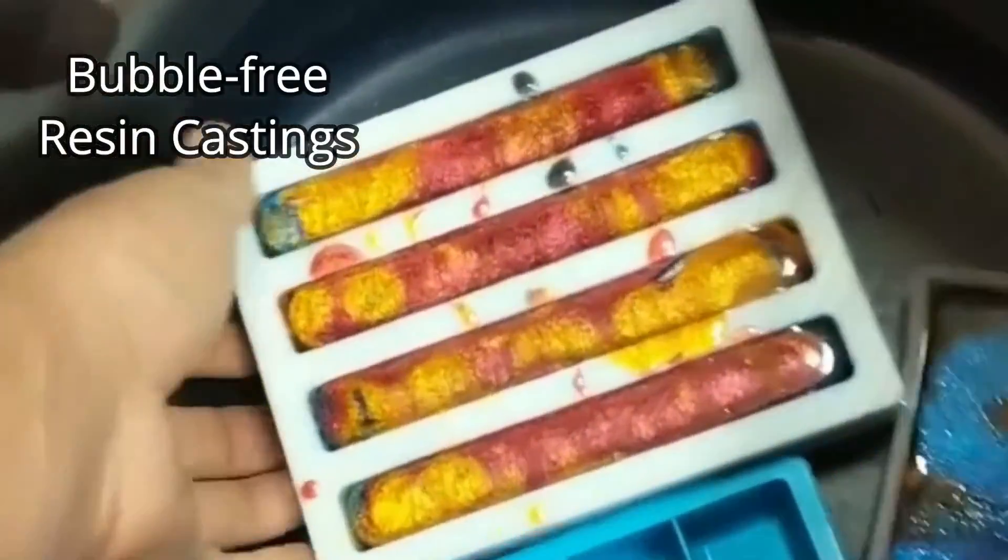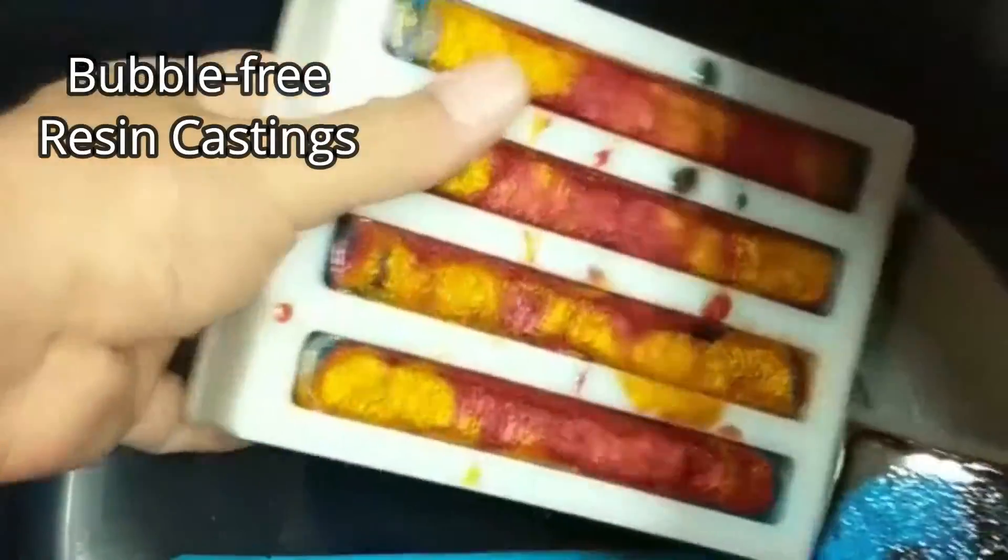Use of a pressure pot is typically required for bubble free and air trap free resin castings.